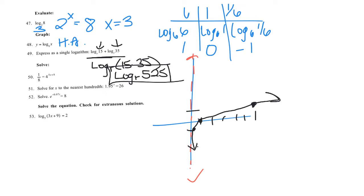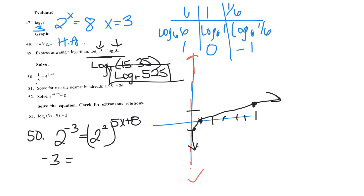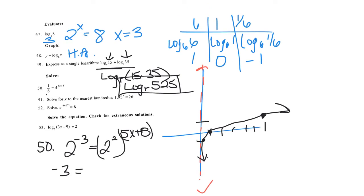Number 50, one-eighth equals 4 to the 5X plus 8. I can rewrite these both as a power of 2. This is equating our bases. This was the easiest equations we solved in that chapter. 2 to the negative 3 power is one-eighth. And 4 is 2 squared to the 5X plus 8. Now that my bases are the same, I can equate my exponents. So negative 3, using the one-to-one property, equals 2 times 5X plus 8, so that's 10X plus 16, and then I can solve. Negative 19 equals 10X. X is negative 19 tenths.